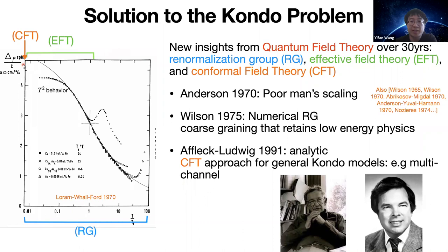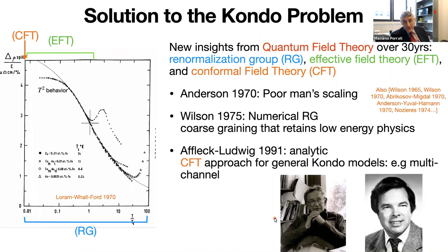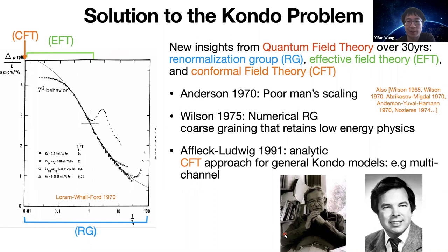The CFT approach directly addressed the extreme low temperature limit of the strongly coupled system. An exact solution of the Kondo problem using the Bethe ansatz was also given by Andrei and collaborators in 1983, which should also be mentioned. The solution to the Kondo problem, including the RG, CFT, and Bethe ansatz methods, also applies to many other systems beyond explaining resistivity of metal with magnetic impurities.